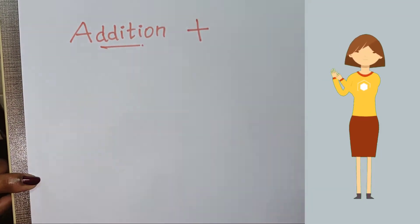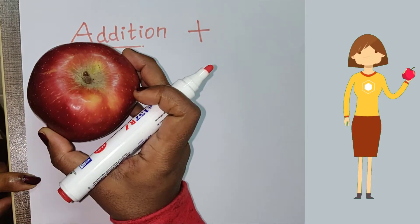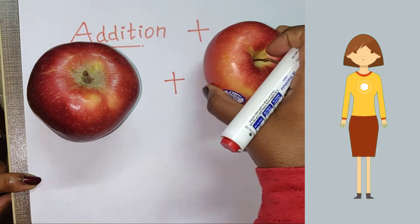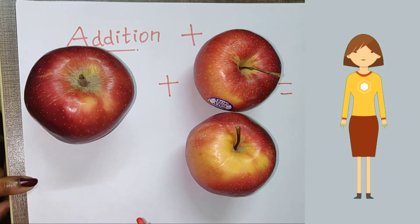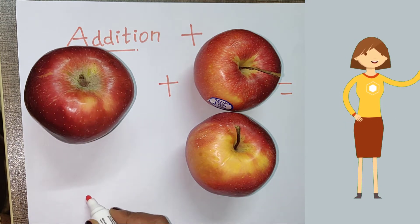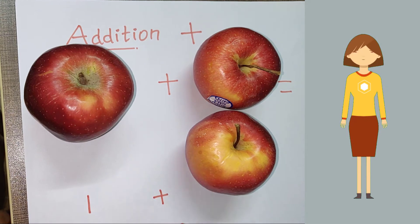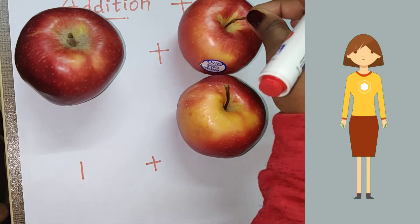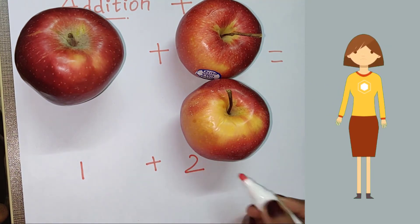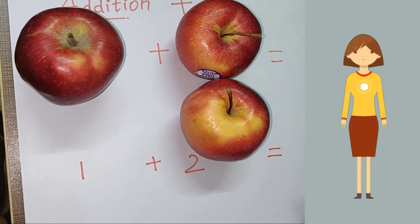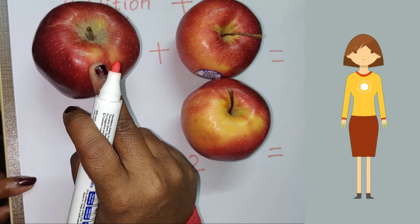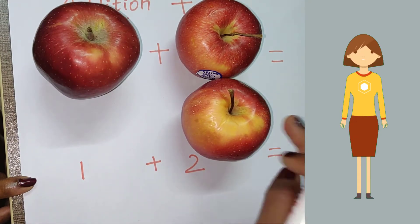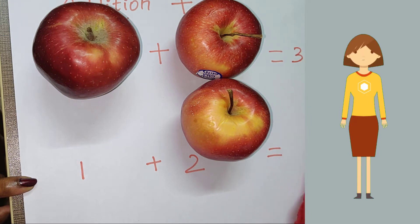Let's go with an example. I am taking one apple plus I am taking another two apples, is equal to dash. We are going to write the same thing in numbers. So I am having one apple, so I am writing one. Plus, and again I am having two apples, so I am writing two, is equal to dash. We can count the apples: one, two, three. So the answer is three.